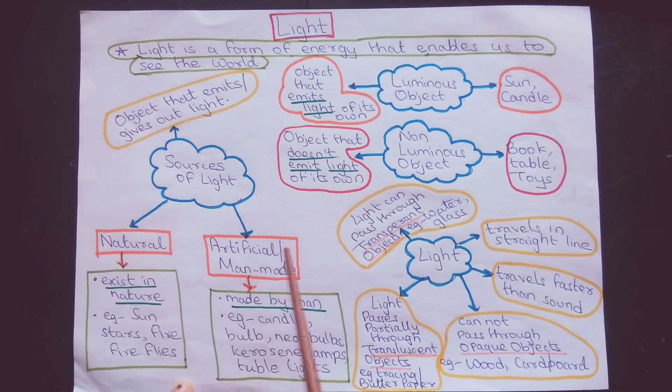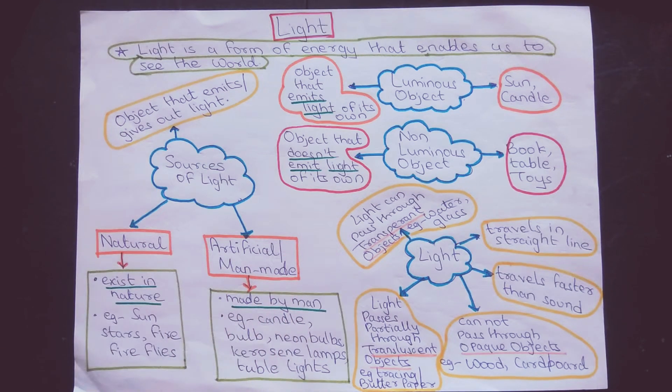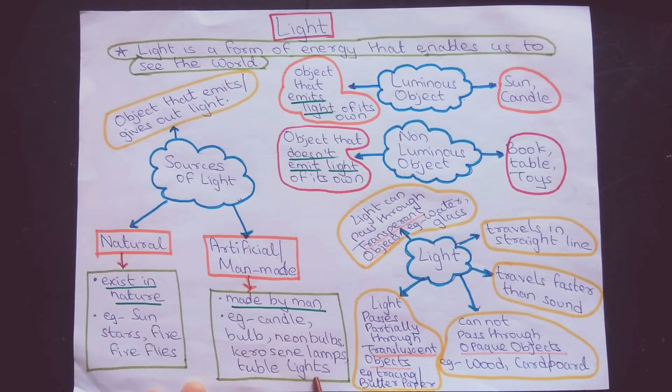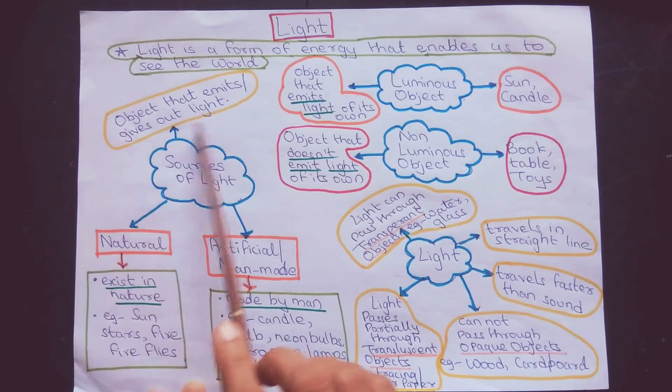Artificial or man-made sources are those objects that are made by man which emit light. For example, candles, bulbs, neon bulbs, kerosene lamps, and tube lights. All these objects are made by man, so they are the artificial sources of light which emit light.